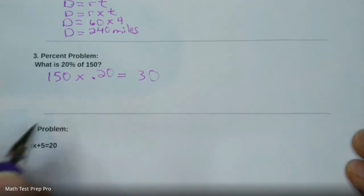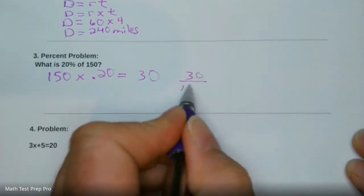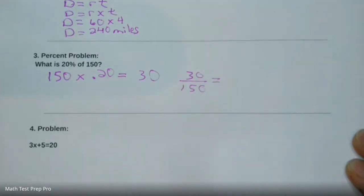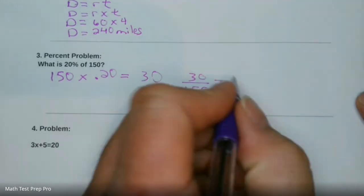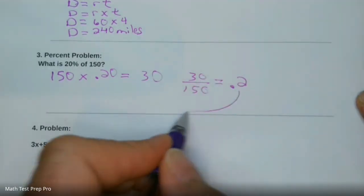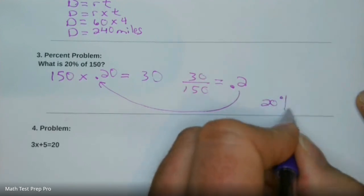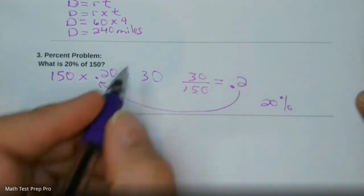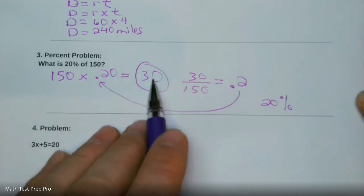If you want to check it, you can go back through. You can say 30 over 150 equals — the calculator shows 0.2, which is 20%. So the answer for the problem is 30. What is 20% of 150? 30.